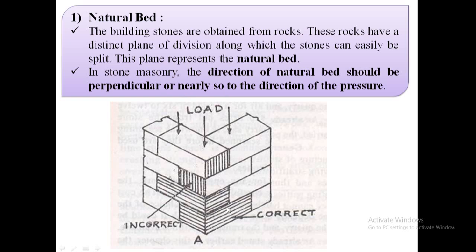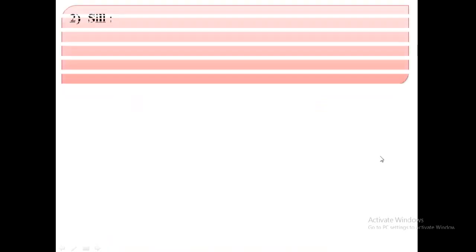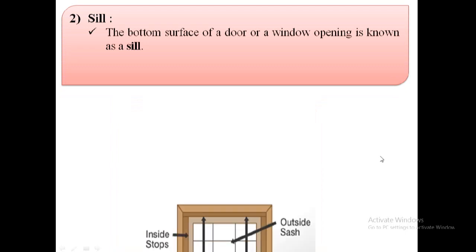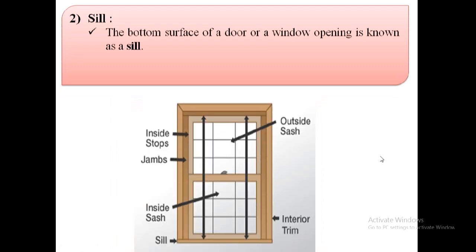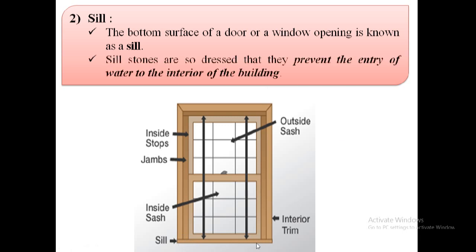In this image you can see the incorrect position of natural bed, which is parallel to the direction of load, and the correct position, which is perpendicular to the direction of pressure. The next term is sill. The bottom surface of a door or window opening is known as a sill. As shown in the image, the bottom surface of this window is known as the sill.